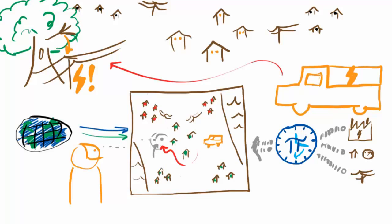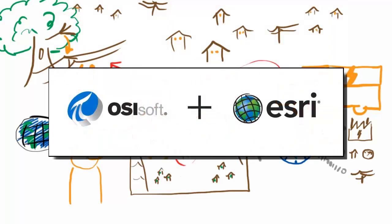That's the power of ArcGIS and the PI system, and that's what's possible with the partnership of Esri and OSIsoft, which is finally bringing together space and time.